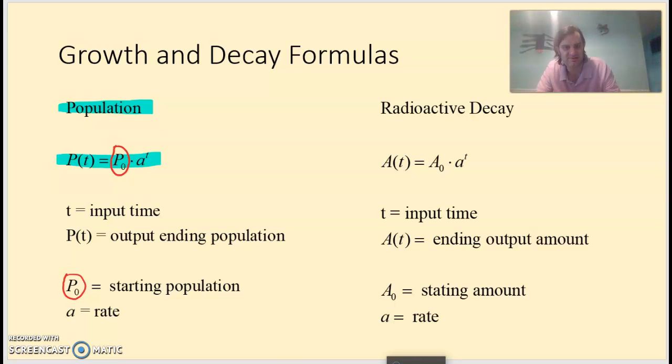Pretty much the same formula over here, just using different variables, is the radioactive decay formula. A(t) equals A sub 0 times a to the t. And there's big A's and little a's, which are definitely different. Everything means exactly the same as far as position goes. t is still a time. Radioactive decay, it could be, depending upon the material, years, millions of years, or even seconds if it's a humanly constructed material.